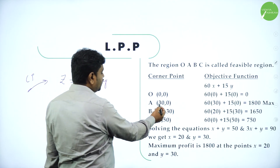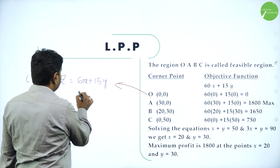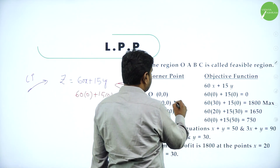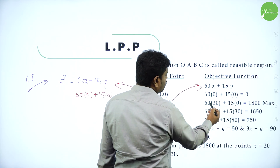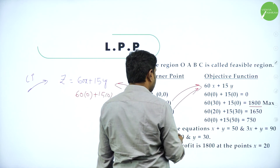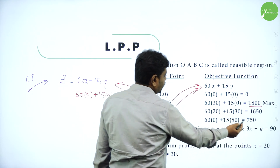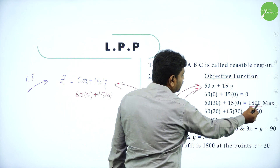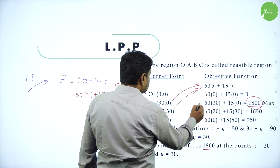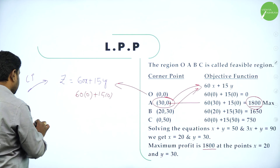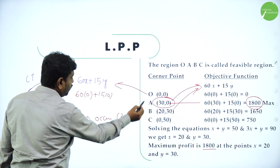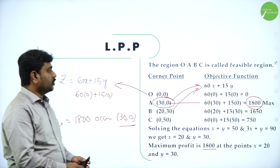Now substitute the corner points into Z = 60x + 15y. At O (0,0): Z = 0. At A (30, 0): Z = 60(30) + 15(0) = 1800. At B (20, 30): Z = 1650. At C (0, 50): Z = 750. They want us to maximize, so the maximum value is 1800. Therefore, Z max = 1800, occurring at (30, 0).